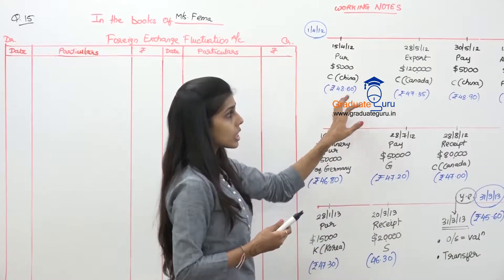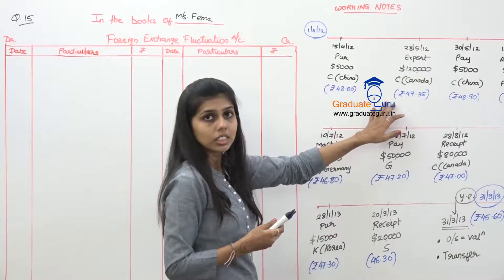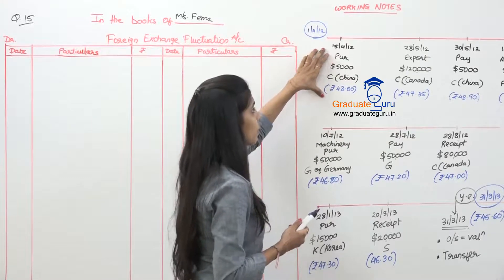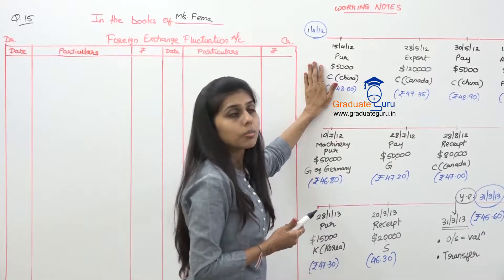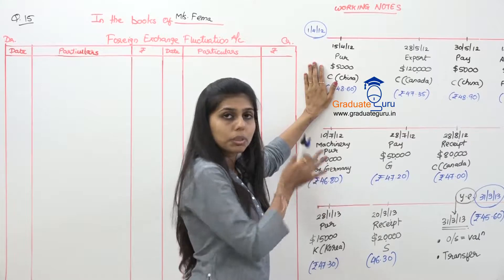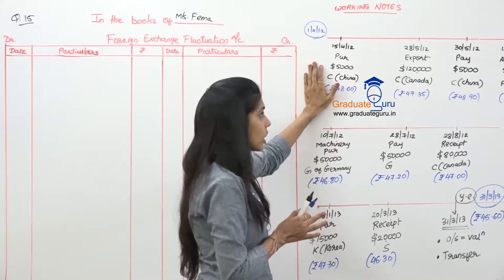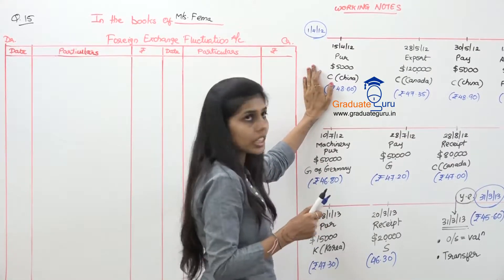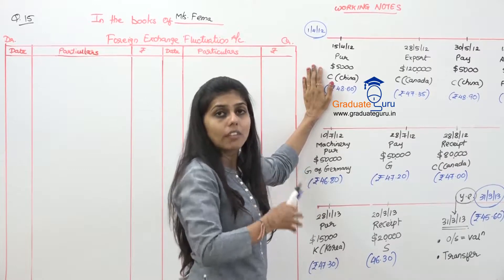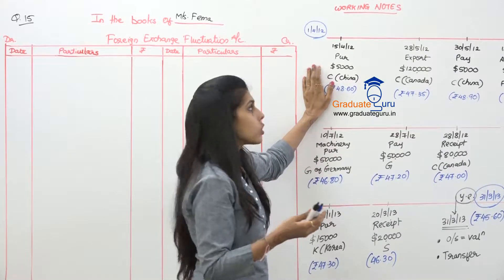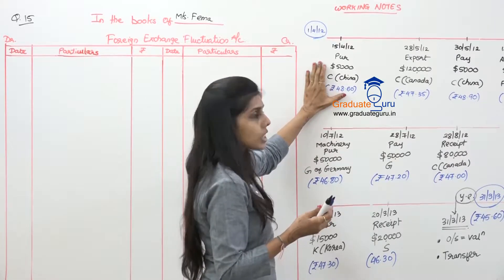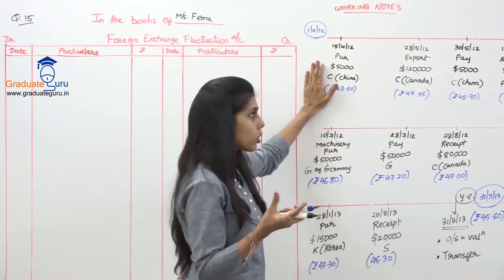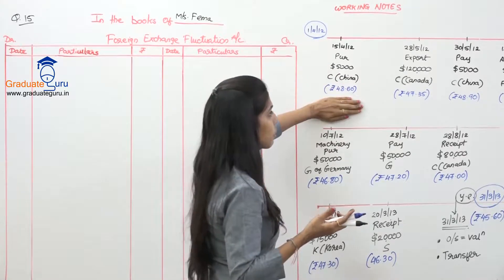Starting with the transactions one by one. On 15th April, the purchase from Sea of China happens. The purchase entry is purchase to Sea of China, but there is no FEF effect here because there is no base rate to compare against - this is just a purchase transaction. No exchange difference arises on the date of purchase.